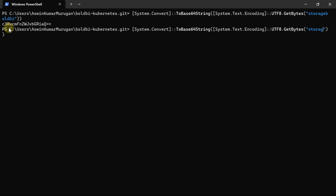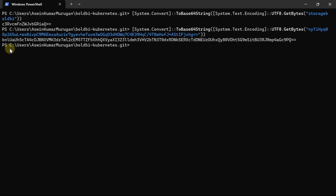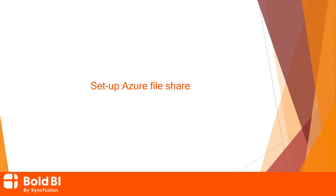Similarly, get the base64 encoded storage account key, and note down the base64 encoded name and key. Next, let me move on to setting up file sharing. File share is a persistent storage for applications running in AKS.